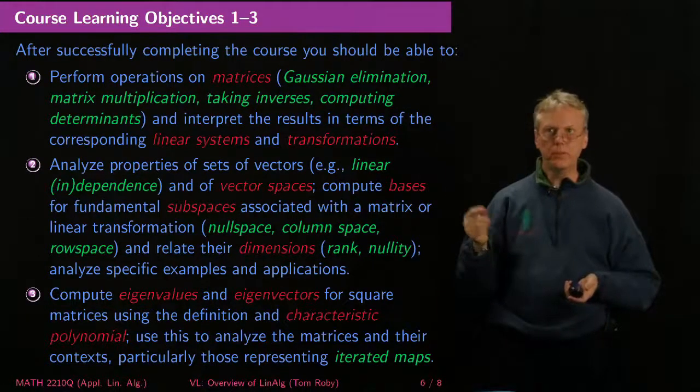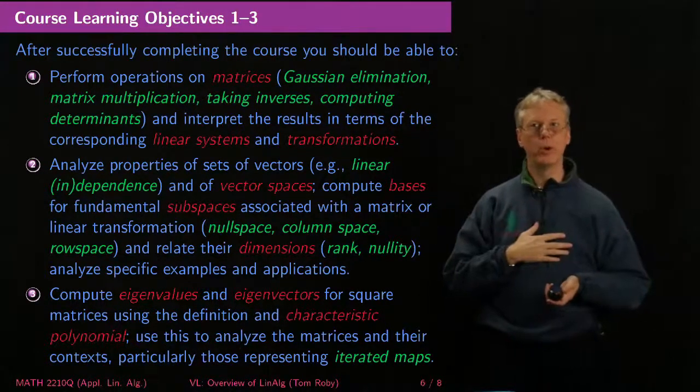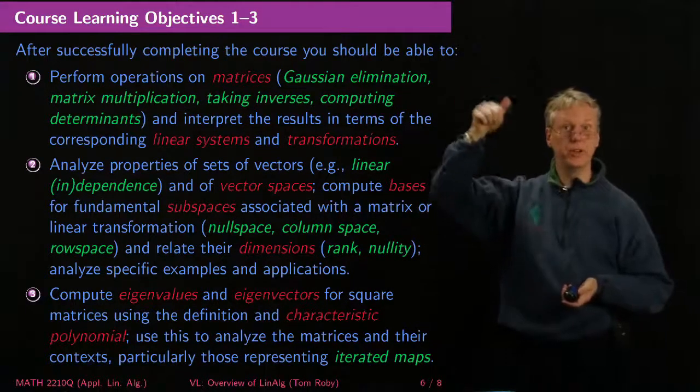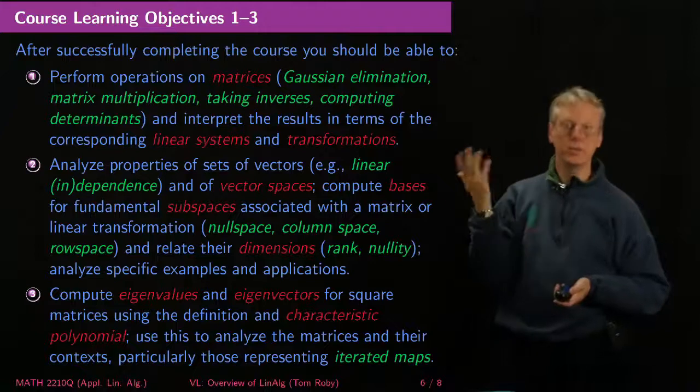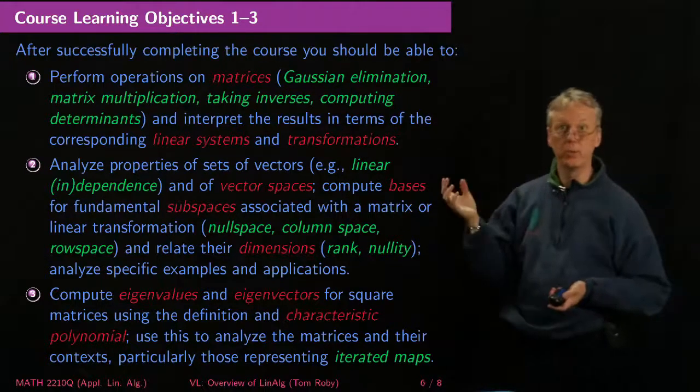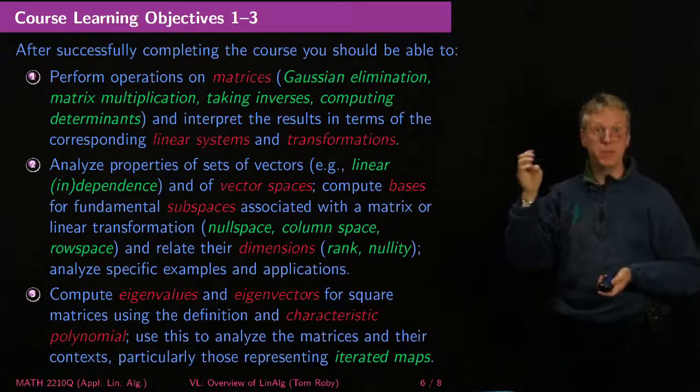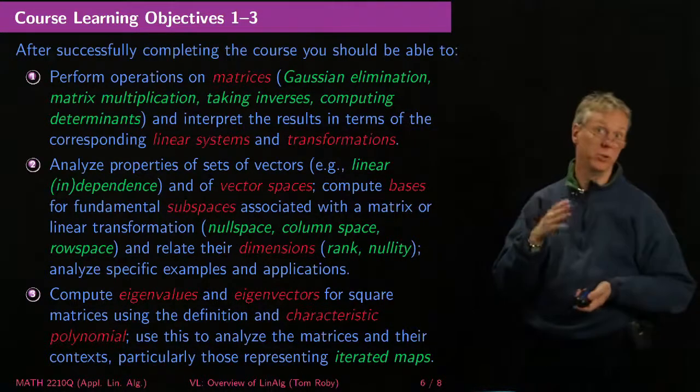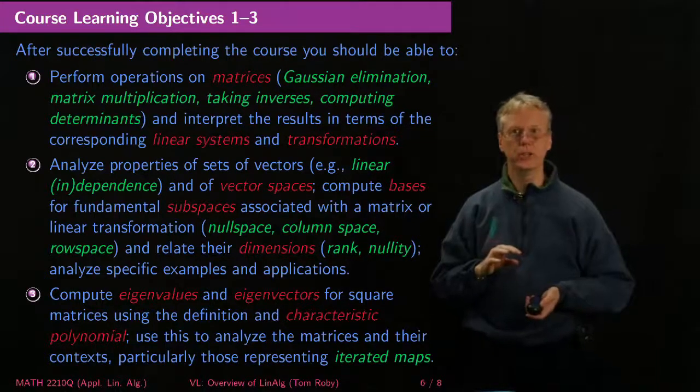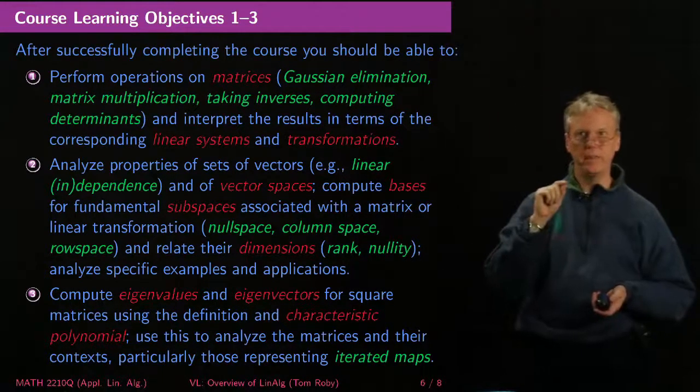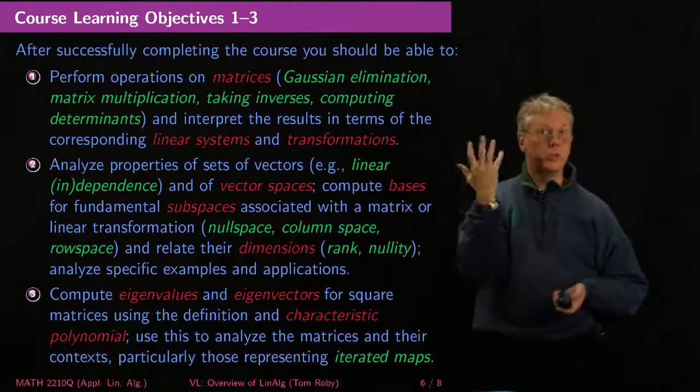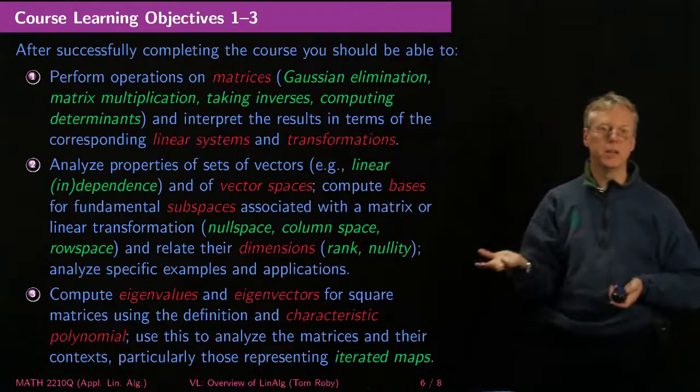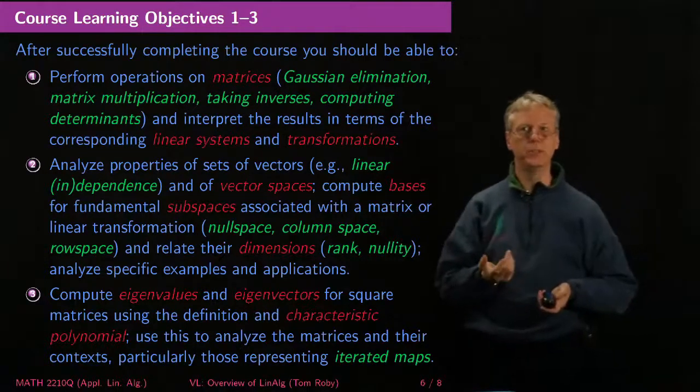So the first one is that you're going to learn how to perform operations on matrices. Gaussian elimination is another name for row reduction, that elimination of variables that let you solve equations. Matrix multiplication is not that hard an operation, but taking inverses of matrices can be hard with respect to that multiplication. Computing determinants, there are better and worse ways. There are ways that are good theoretically that aren't so good computationally. We'll talk about all of that. And then I'll of course want you to be able to interpret the results in terms of the corresponding linear systems and transformations, because otherwise you can't make any use of this for applications.